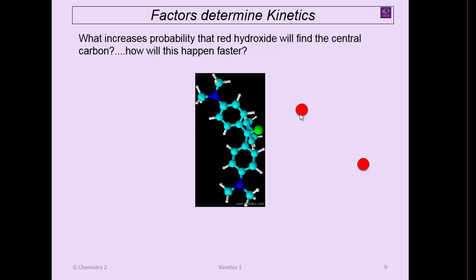What's another way you could increase the probability of this red finding that center carbon from the right orientation? You could double the amount of reds present, or triple them, quadruple them, or five times more of these reds present. Then obviously the odds are going to be very high that one of those is going to find that in the right orientation. So increasing concentration will also increase the rate at which a reaction happens.